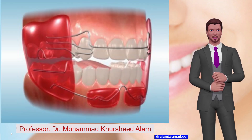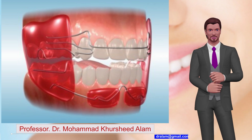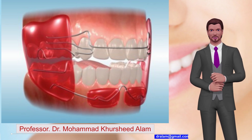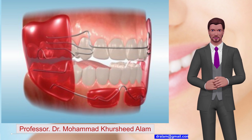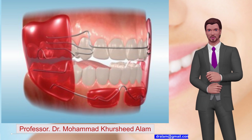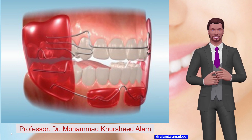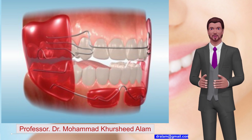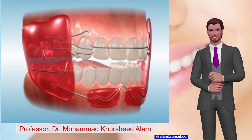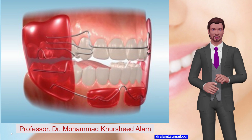Number 5: Frankel appliance, also called the Frankel Functional Regulator. Developed by Rolf Frankel in the 1950s. Tissue-borne passive appliance. Used in Class 2 Division 1, Class 2 Division 2, and Class 3 Malocclusion, as well as open bite and bimaxillary protrusion cases. Can be used with headgear in patients with high mandibular plane angle and vertical maxillary excess.